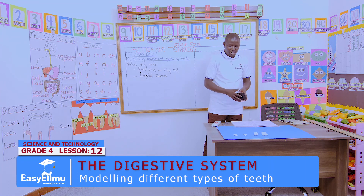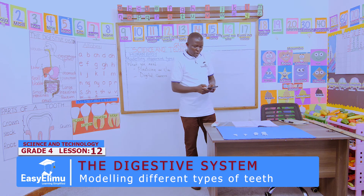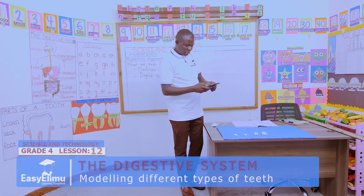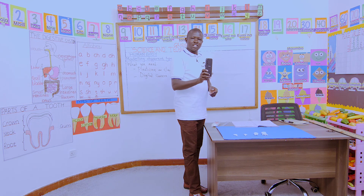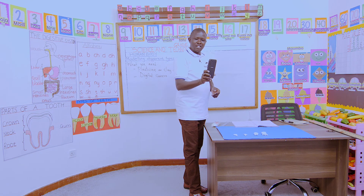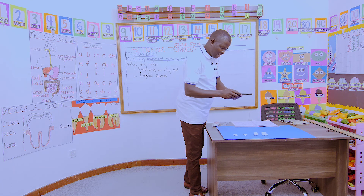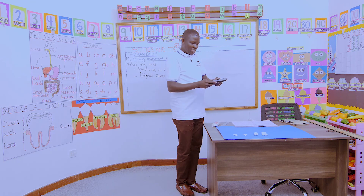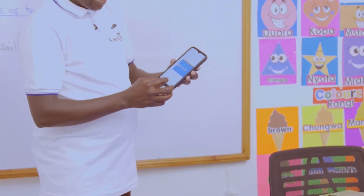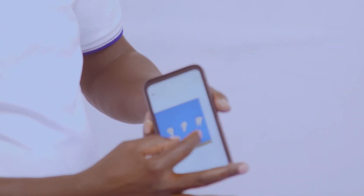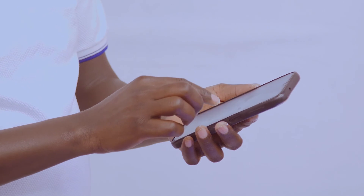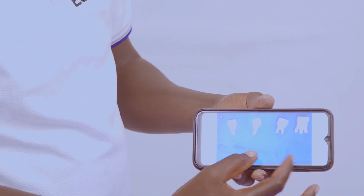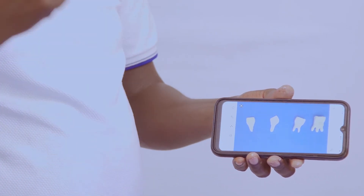After finishing, we take a photo of our model so that we can print them and stick them in our portfolio for good work done. Because I don't have a digital camera, I'll use my phone as a digital camera device to take the picture and print afterwards. As you can see on my phone, I have already taken a photo of the four types of teeth. Let me enhance it so you can see correctly — these are the four types of tooth that we have modeled.